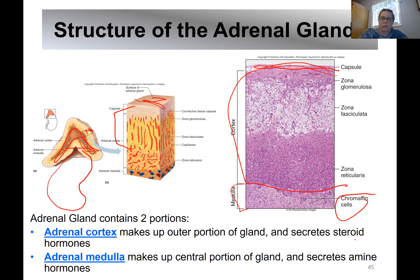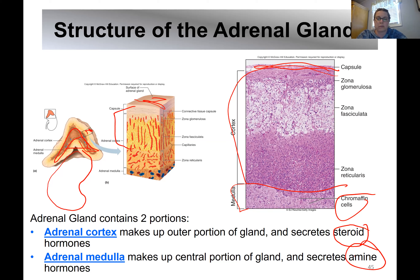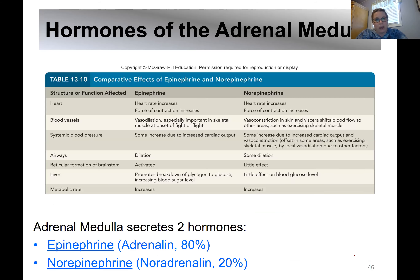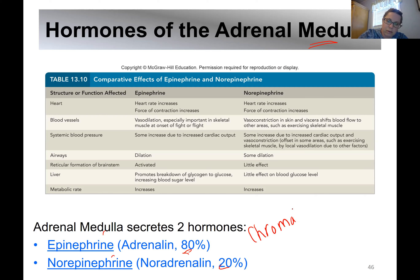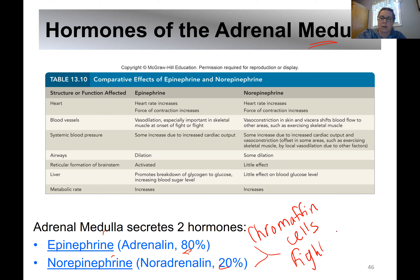The adrenal cortex produces steroid hormones, and the adrenal medulla produces amine hormones — epinephrine and norepinephrine, also called adrenaline and noradrenaline. The adrenal medulla secretes approximately 80% epinephrine and 20% norepinephrine. These are produced by chromaffin cells, are classified as catecholamines, and they cause the fight-or-flight response.